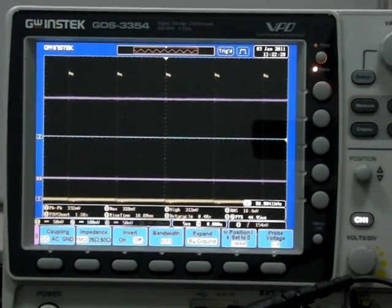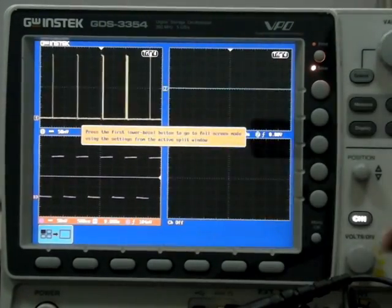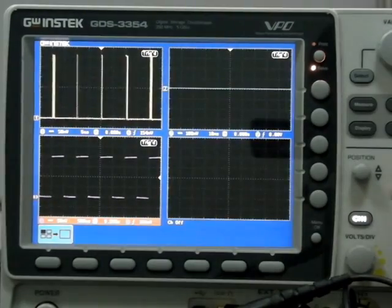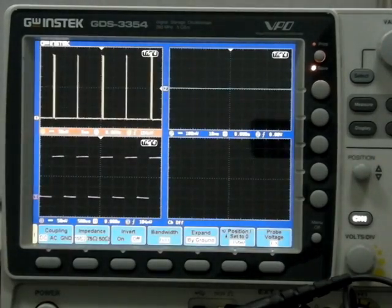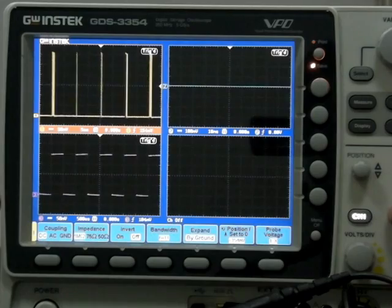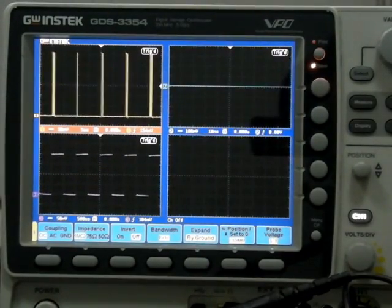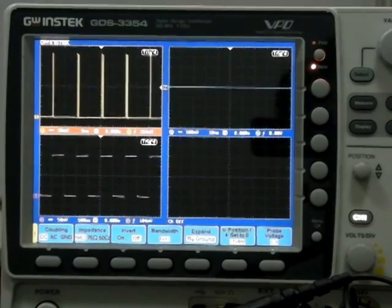Through the use of split screen function of the GDS-3000, independent status of each channel can be displayed. Input impedance can all be set independently for each split window, and users can also add independent measurement items. These advantages above are not provided by DS-5000 A.